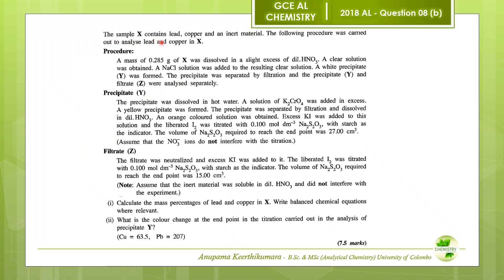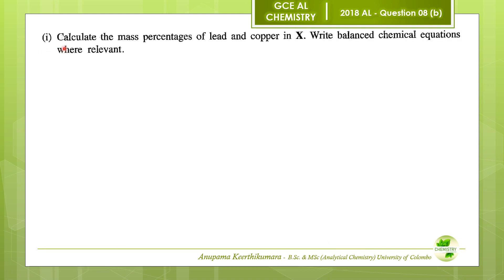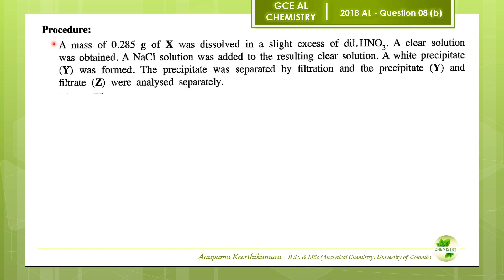Sample X contains lead, copper, and an inert material. The following procedure was carried out to analyze lead and copper in sample X. Students, please try question number one before continuing: calculate the mass percentages of lead and copper in X, writing balanced chemical equations where relevant. To calculate the mass percentages, we need to go through the given procedure.